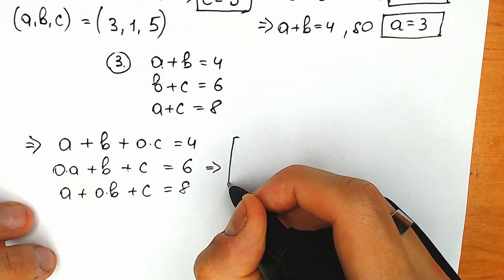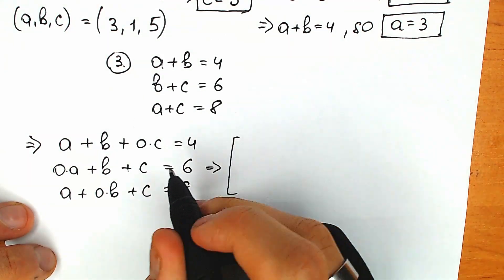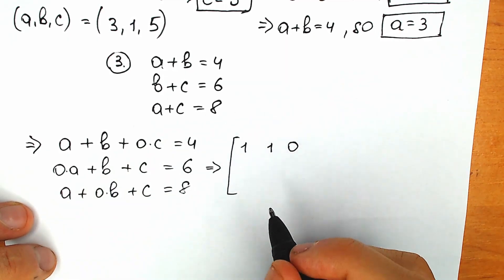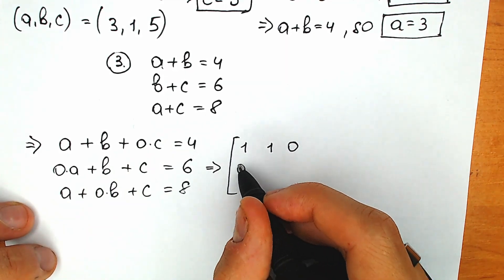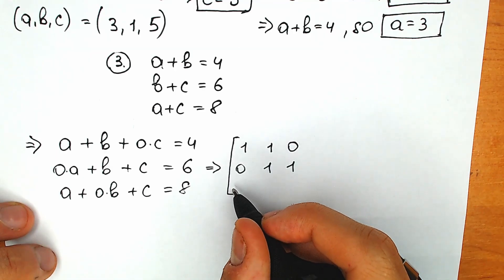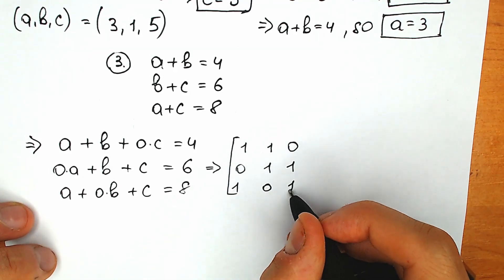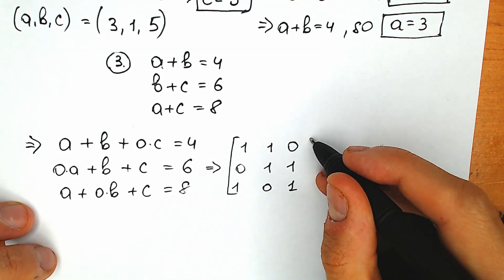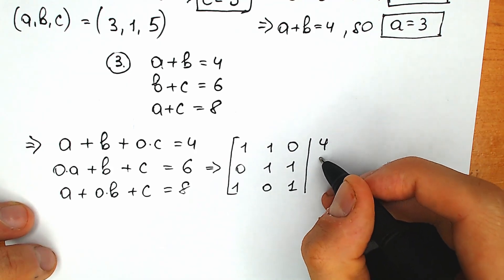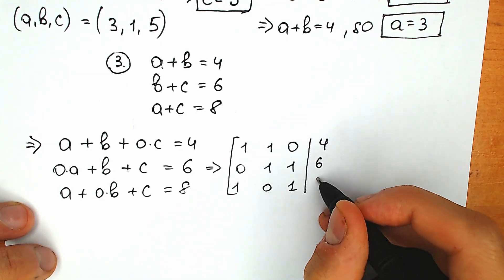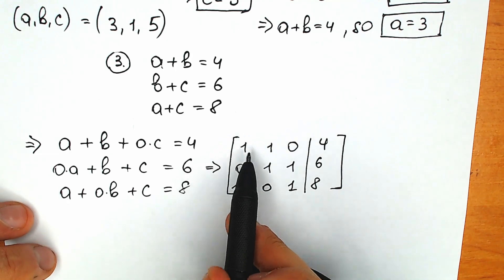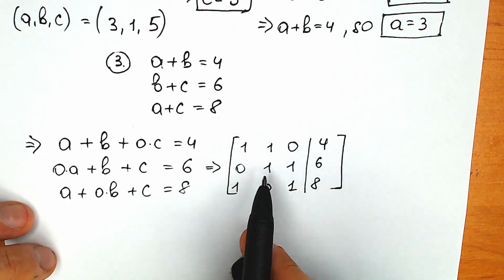From this, we create the augmented matrix. From the first equation, the coefficients are 1, 1, 0. From the second equation: 0, 1, 1. From the third equation: 1, 0, 1. On the right side we have 4, 6, and 8. We need to create a diagonal of 1s with zeros below — the upper triangular form.